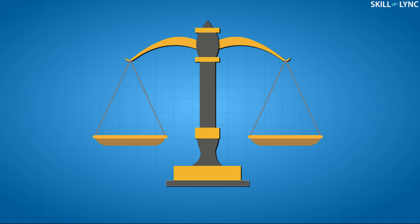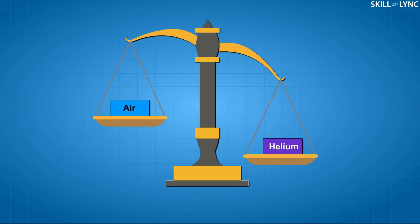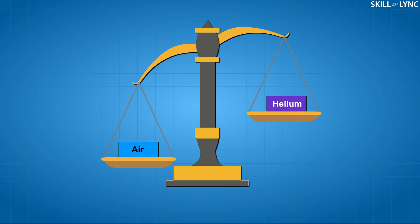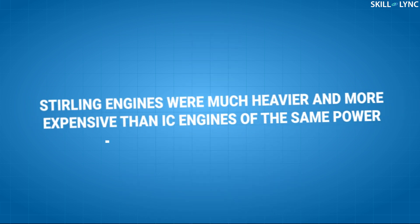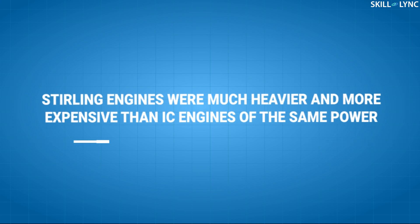This was achieved by replacing the air with helium as the working fluid. Since helium is much lighter than air, much less energy was expended in moving it and more energy was spent moving the piston. Even though the study was a success, it wasn't very feasible. Stirling engines were much heavier and more expensive than IC engines of the same power, making cars equipped with them more expensive.